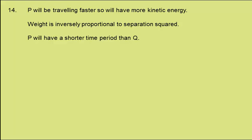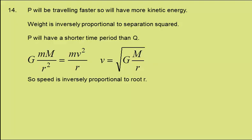Statement D: the speed of P is three times that of Q. The force due to gravity, GmM over r squared, provides the centripetal force, mv squared over r. Rearranging for v and simplifying, we get this expression. So the speed is inversely proportional to the square root of r.